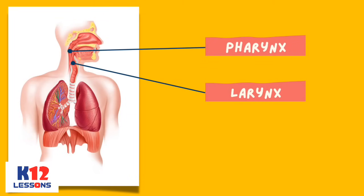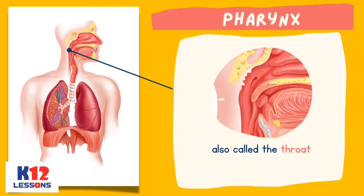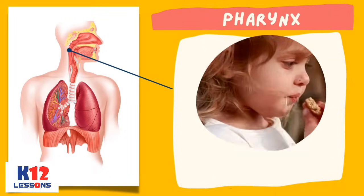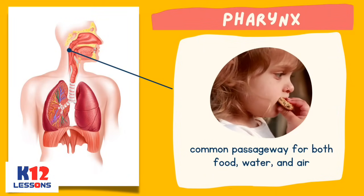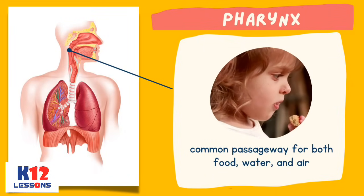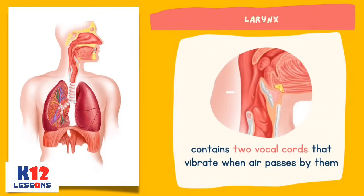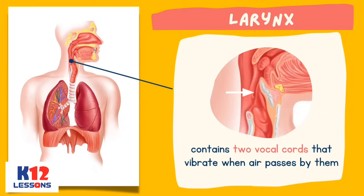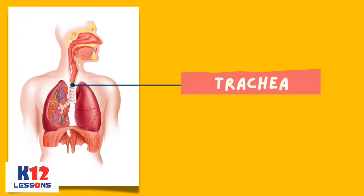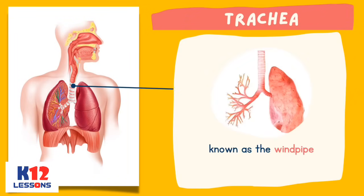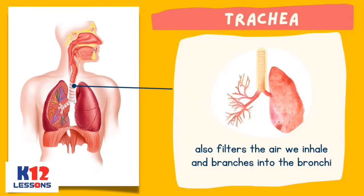Pharynx and larynx: the pharynx is also called the throat. It is the common passageway for both food, water, and air. The larynx contains two vocal cords that vibrate when air passes by them. Trachea, also known as the windpipe, also filters the air we inhale and branches into the bronchi.